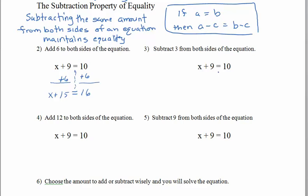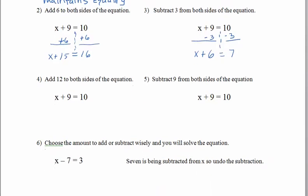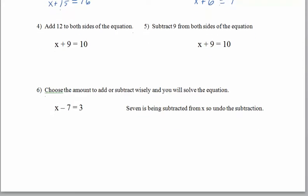Keeping the same equation x + 9 = 10, we know x = 1. Now subtract 3 from both sides: 10 − 3 = 7, and 9 − 3 = 6. We get a brand new equation x + 6 = 7, and the answer is still 1. You can do the same addition or subtraction to both sides of the equal sign and still maintain equality and the solution.